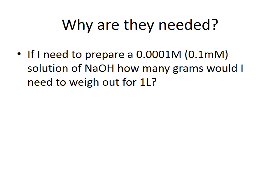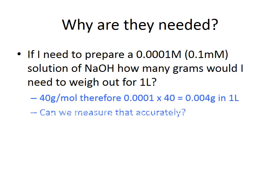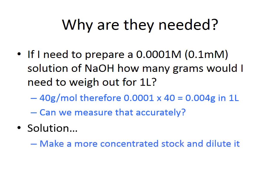You might ask why you need serial dilutions rather than a simple dilution each time. Consider making a 0.1 millimolar solution of sodium hydroxide — how many grams would you need for 1 litre? The molecular weight of sodium hydroxide is 40 g/mol, so for 0.0001 molar you would need 0.004 grams in 1 litre. The problem is that 0.004 grams is extremely difficult to measure accurately on most balances. The solution is to make a more concentrated stock solution and then dilute it down to achieve your target concentration.